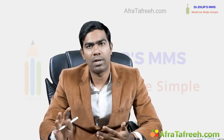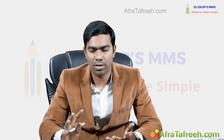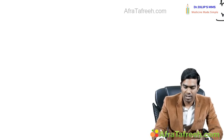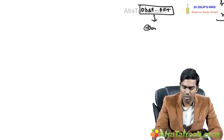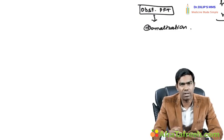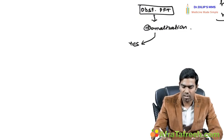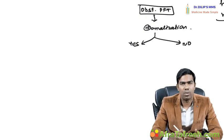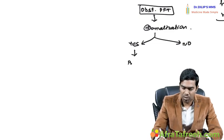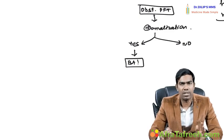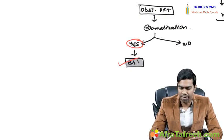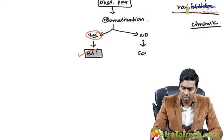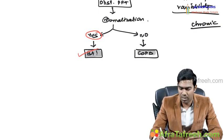Despite confusing terminologies — asthma-COPD overlap, chronic asthmatic bronchitis, bronchial asthma — the simple rule is: whenever you have an obstructive PFT, see whether normalization is possible or not. If normalization is present, diagnose bronchial asthma — no matter whether bronchitis features are there. Normalization of PFT is the gold standard. If there is no normalization, these patients will come under COPD only, without any doubt.